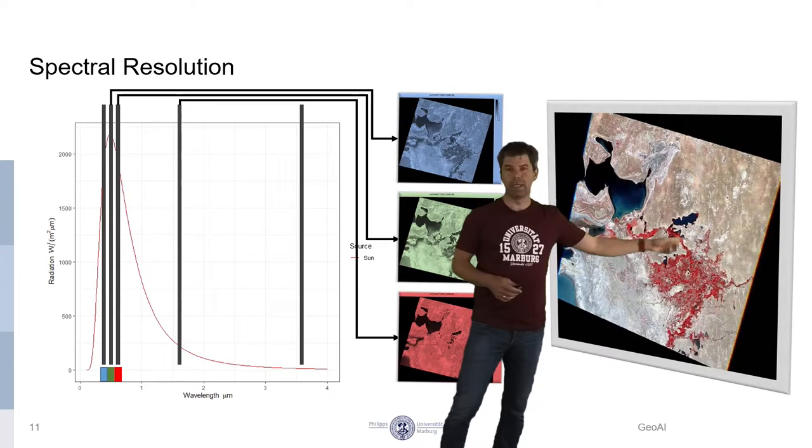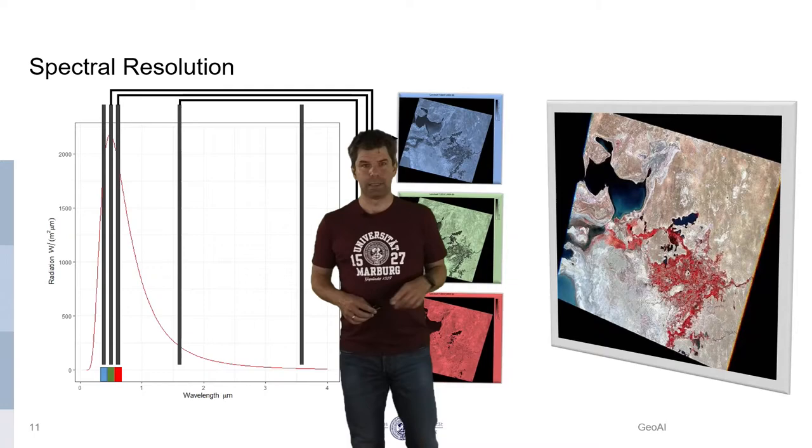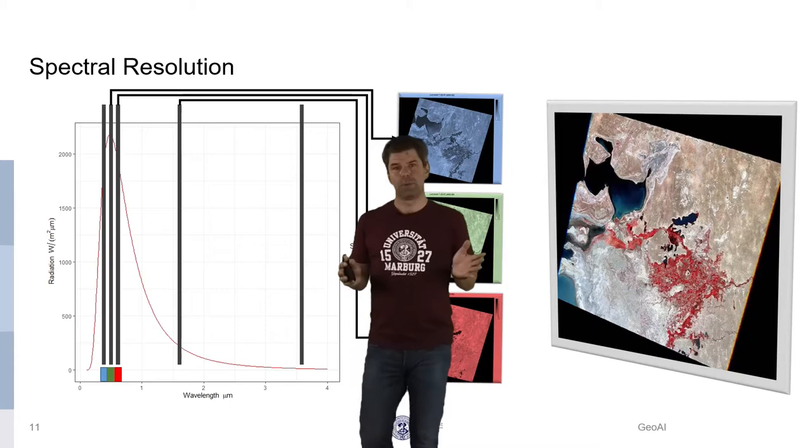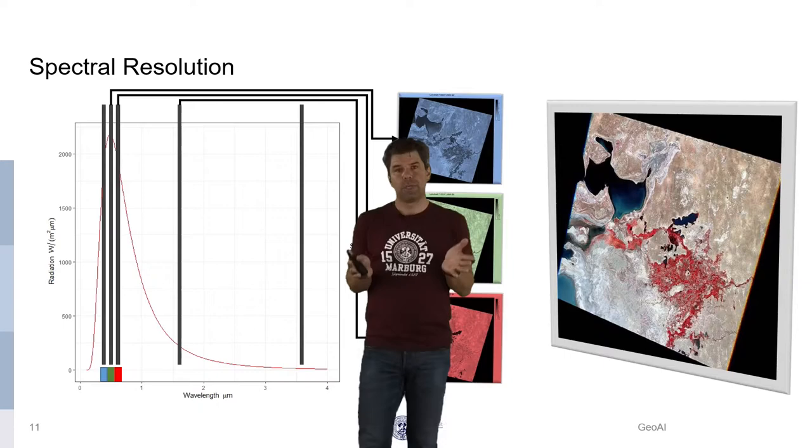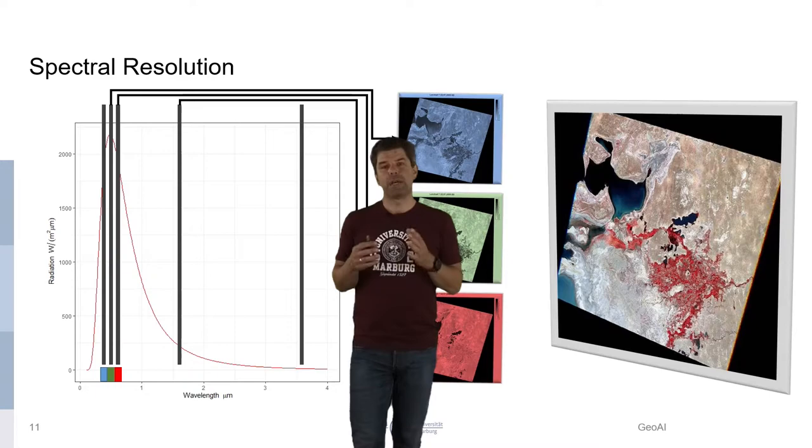And you see all these red areas here, and these red areas are actually green, healthy vegetation. And using such a channel in the near-infrared is quite common to visualize healthy green vegetation, and the reason behind is that green vegetation has a very low reflectance in the red spectrum, but a very high reflectance in the near-infrared.